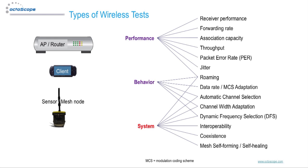We will show how performance, behavioral, and system tests can be set up using the stackable and highly configurable Octobox testbed. Here we see a broad range of tests important in optimizing wireless products. Throughput is the most common performance test, but there are many other important performance metrics. For example, voice and other real-time transmissions such as video conferencing and gaming have stringent requirements regarding packet error rate and jitter. Access point performance testing includes validating association capacity and forwarding rate.